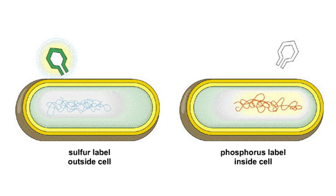After the blender treatment, the bacteria infected by the sulfur-labeled viruses did not contain radioactive sulfur. The sulfur-labeled protein was outside of the cell.